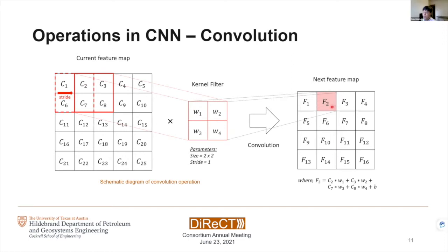The next feature map values are computed by the weighted sum between the current feature map and the filter. For example, to compute a value we use matrix multiplication between C2 and W1, C3 and W2, and so on, with some bias. By moving this convolutional filter from the upper top to the lower bottom we can navigate the filter and fill out the other values in the next feature map. Depending on what the convolutional filters are, we can extract different information from the current feature map to the next.